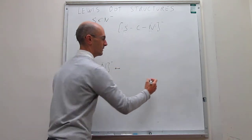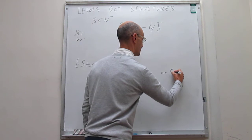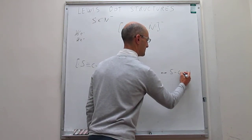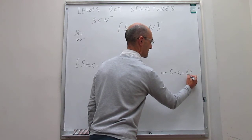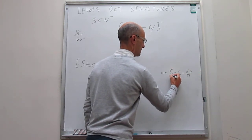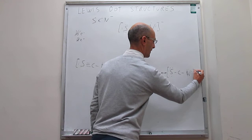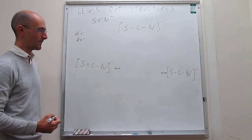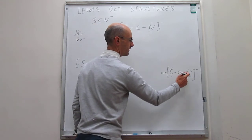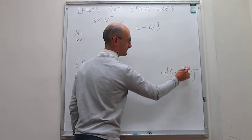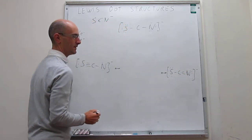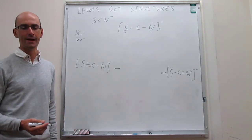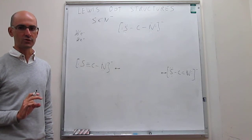The same thing can be done with nitrogen. In the SCN parent structure, we involve those lone pairs on nitrogen to form multiple bonds. This lone pair can be used to form a double bond with carbon, resulting in a triple bond between carbon and nitrogen. In that case, each of the atoms has an octet, and that also seems to be a legitimate Lewis dot structure.